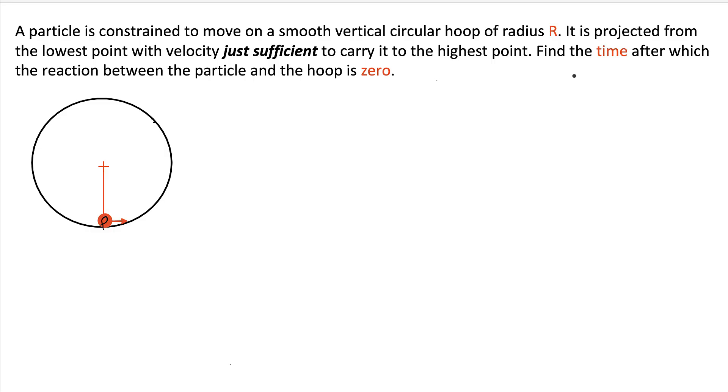Let's get started. There is a particle, let's say particle P, and it can move inside a hoop of radius r. It is projected from the lowest point, point P, with velocity just sufficient to carry it to the highest point, let's say the highest point is Q.